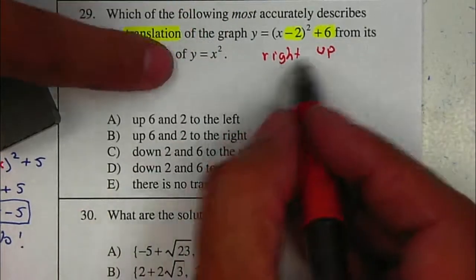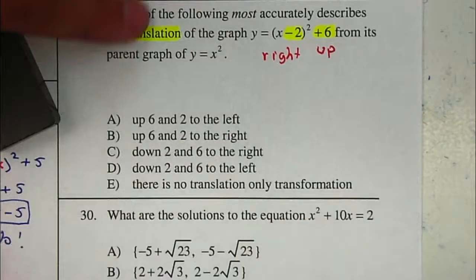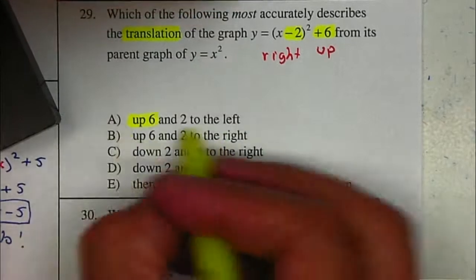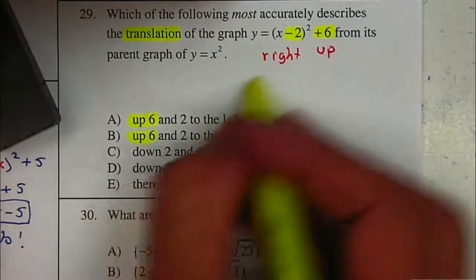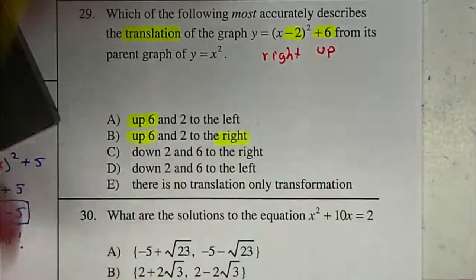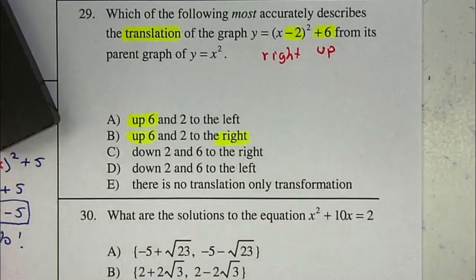So the transformation is right 2 and up 6, so your answer will be letter B.